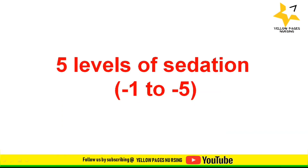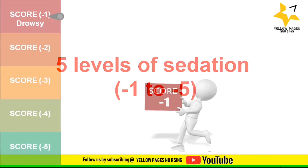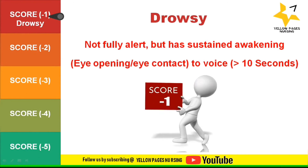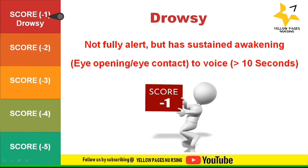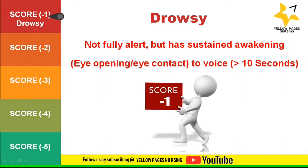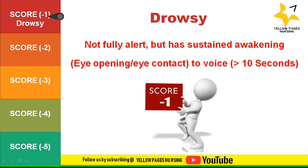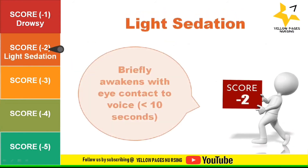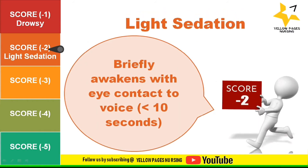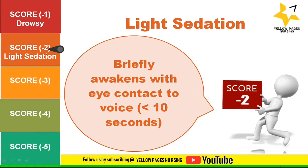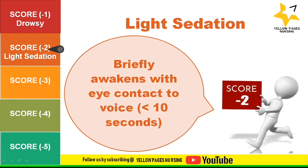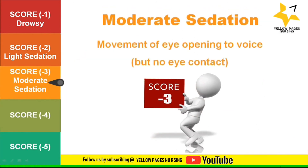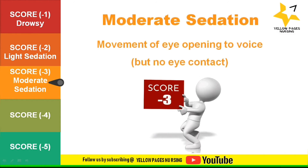Now come the negative scores, that is levels of sedation from minus one to minus five. Score minus one denotes drowsy: the patient is not fully alert but has sustained awakening, that is eye opening or eye contact to voice for more than 10 seconds. Score minus two denotes light sedation: patient briefly awakens with eye contact to voice for less than 10 seconds. Score minus three denotes moderate sedation: patient has movement or eye opening to voice but no eye contact.